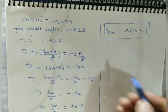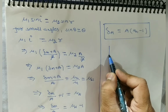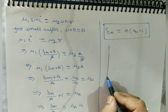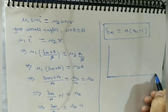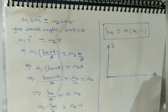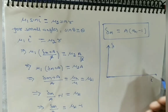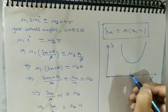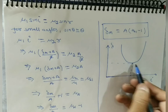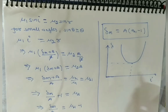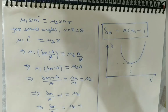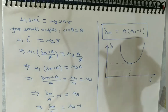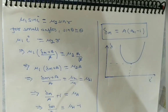Now we can draw the graph between angle of deviation (δ) and angle of incidence (i). The graph is a curve with a minimum point — that minimum point is the minimum deviation δm. This is all about the prism derivation. We have derived the formula and drawn the graph. Thank you.